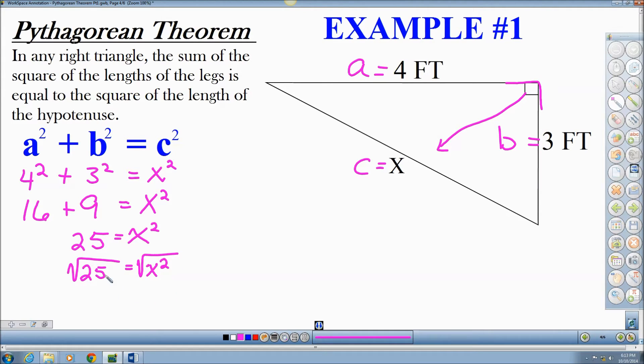So the square root of 25 is 5, and the square root of X squared is, of course, X. It undoes it. And so I find out that X is actually worth 5 feet. So my missing side C, or X in this case, is equal to 5 feet.